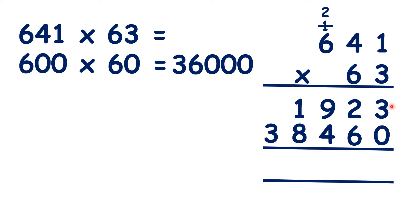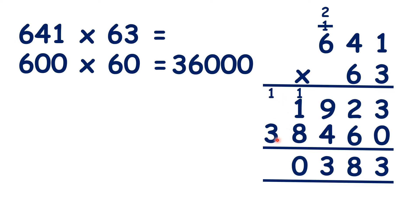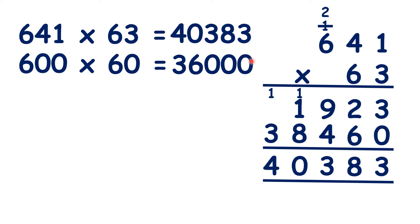Now, adding up our answers: 3 plus 0 is 3, 2 plus 6 is 8, 9 plus 4 is 13, 1 plus 1 plus 8 is 10, and 1 plus 3 is 4. So our answer is 40,383. That's close to our estimation. And like we expected, it's a larger number than our estimate, because to estimate for this question, we rounded both numbers down.